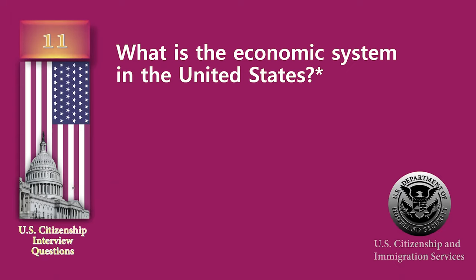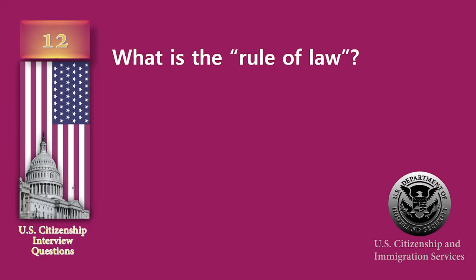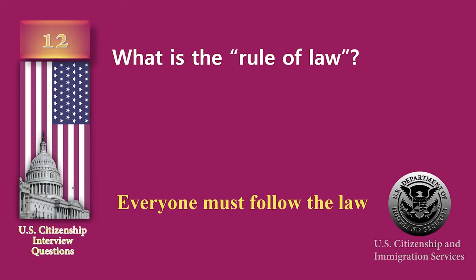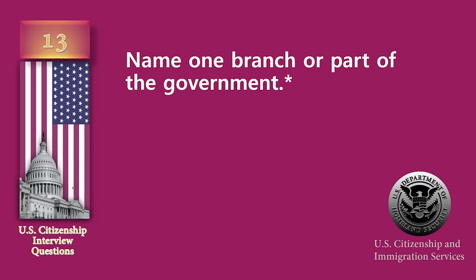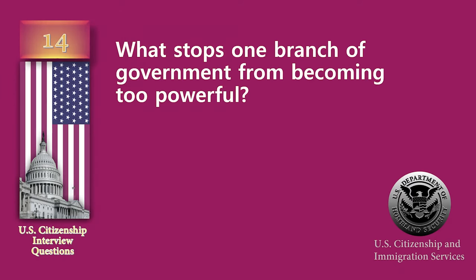What is the economic system in the United States? Capitalist economy. What is the rule of law? Everyone must follow the law. Name one branch or part of the government. Congress. What stops one branch of government from becoming too powerful? Checks and balances.